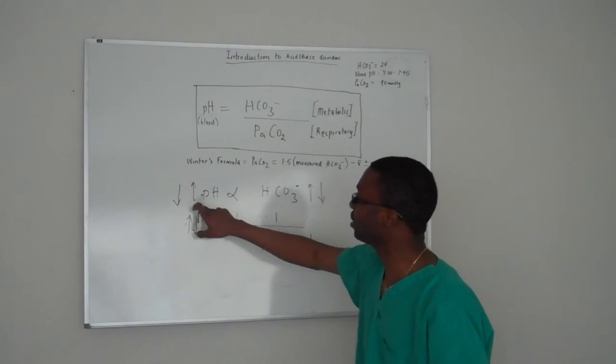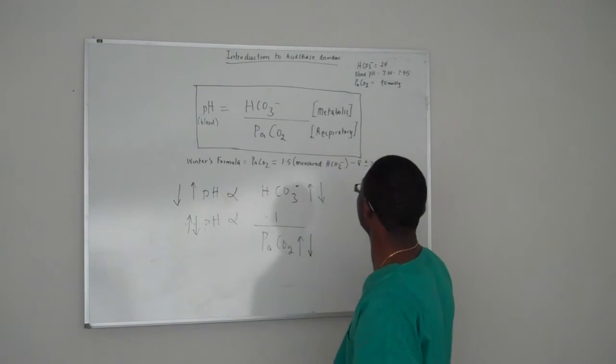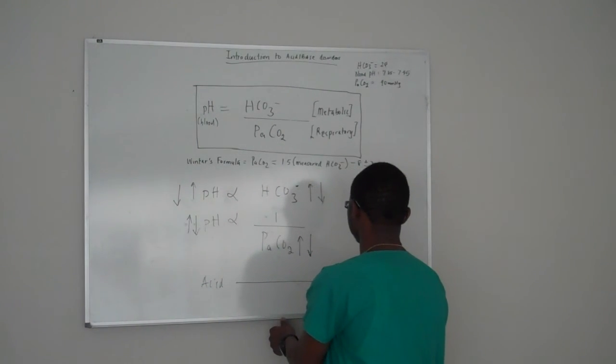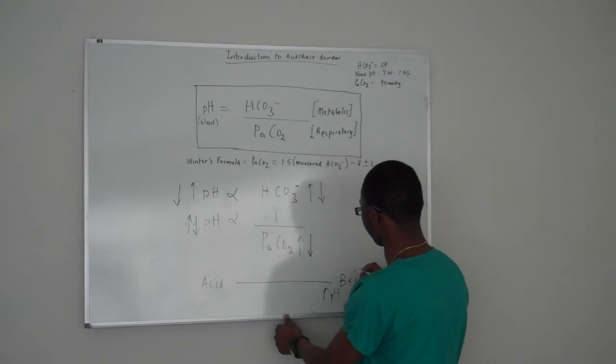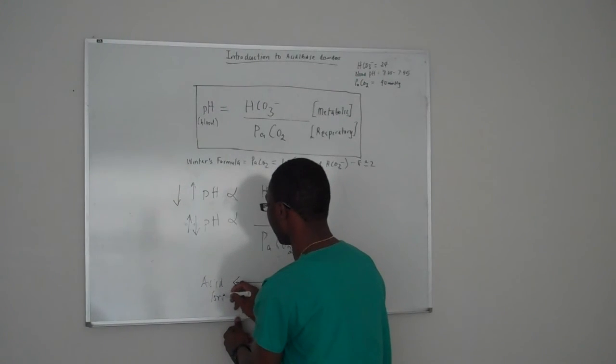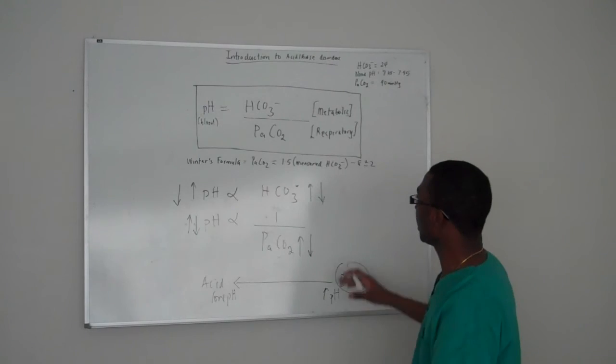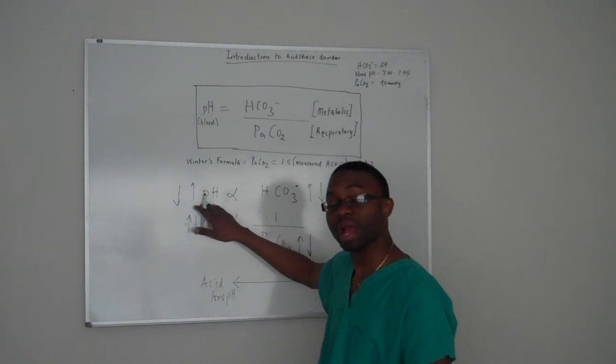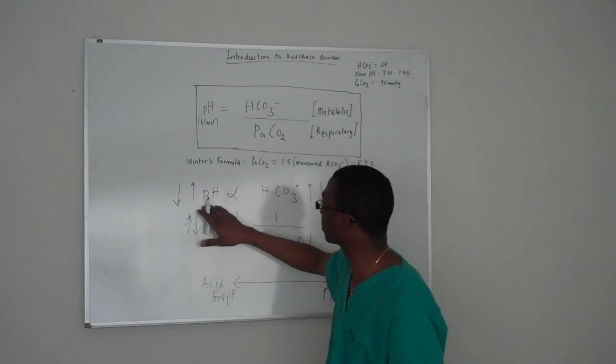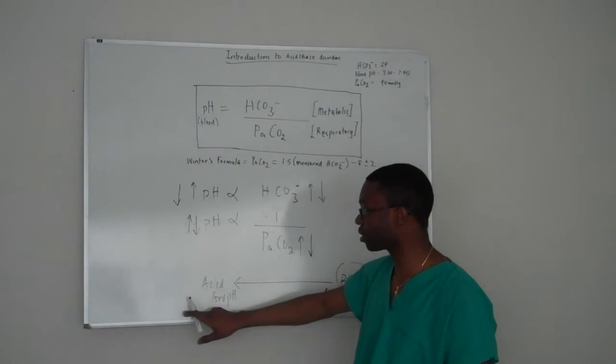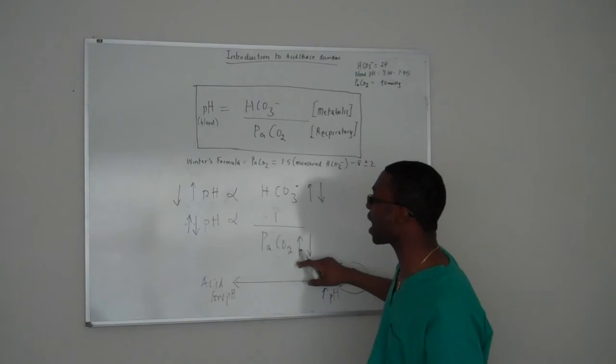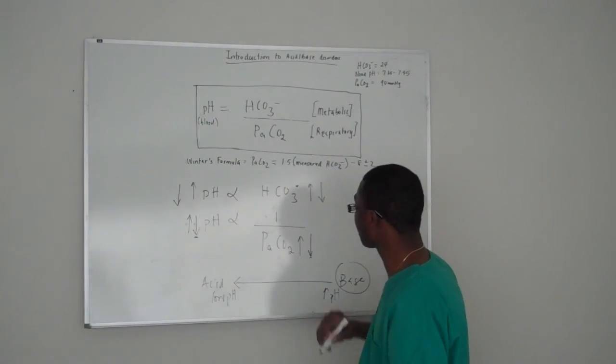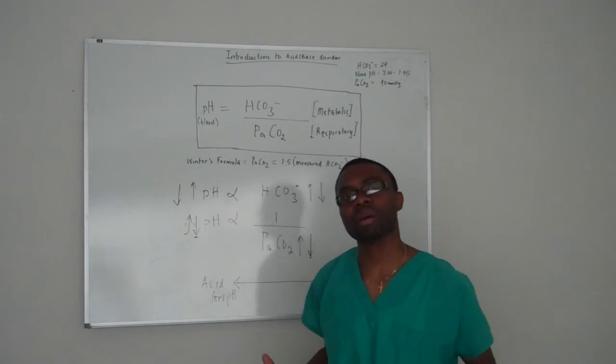When bicarbonate increases, your pH is going to increase. If your pH increases, a high pH is a basic solution. A low pH is an acidic solution. So if your bicarb is too high, your pH is over 7, you become a basic solution. If it's too low, it becomes acidic because the pH is going to drop. The same thing with PCO2 - if it's too high, your pH is going to drop. If your PCO2 is too low, automatically your pH goes up, making it alkalotic.